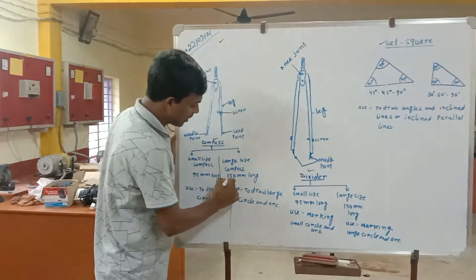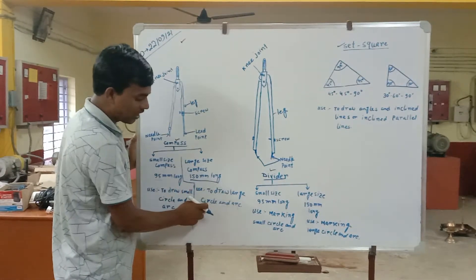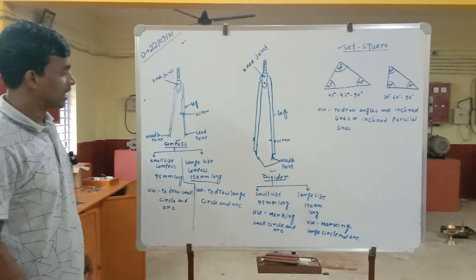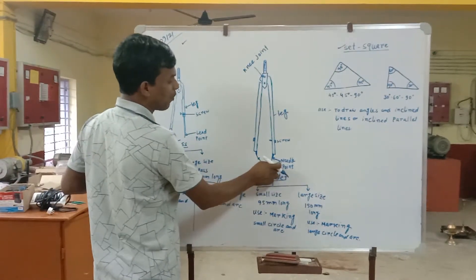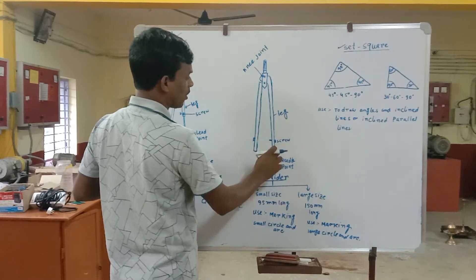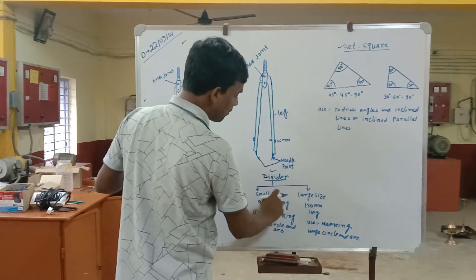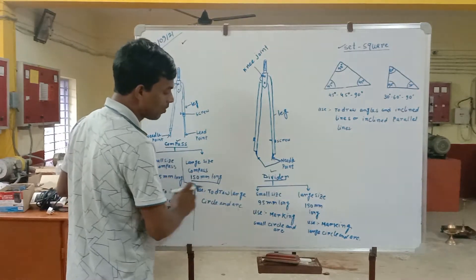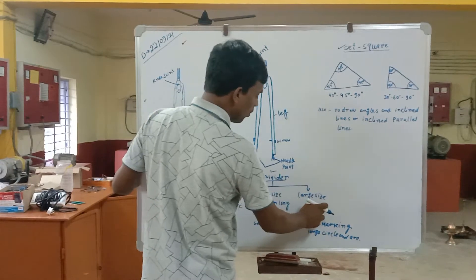Next is the divider. The divider differs from the compass in that both ends are needle points, with no lead point. Its parts are the knee joint, leg, and screw. The screw can be removed at the needle point. The small size divider is 95 mm long and the large size divider is 150 mm long.